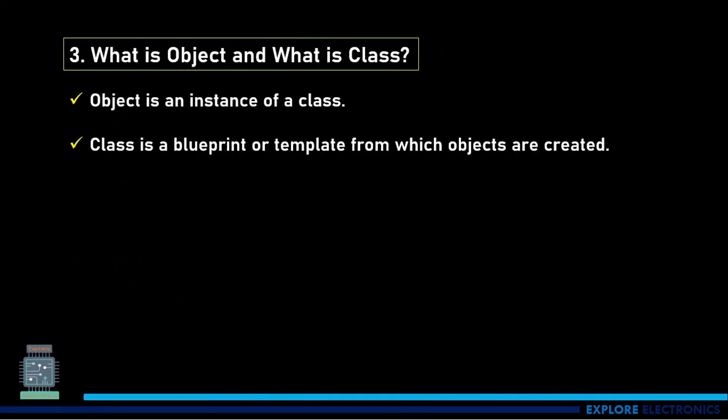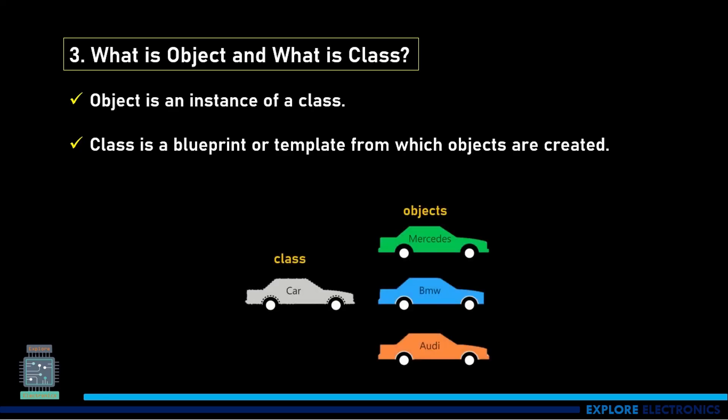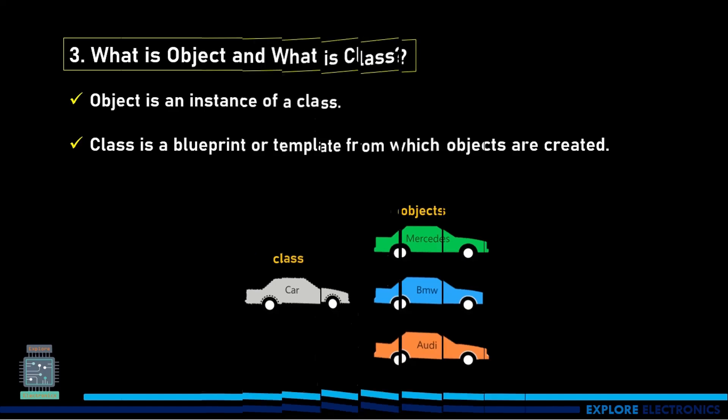Then what is an object and what is a class? An object is an instance of a class. A class is a blueprint or template from which objects are created. Here you can see the example: car is a class. In that class, we can create objects like a car can be a Mercedes, BMW, or Audi. This is the best example to understand object and class.